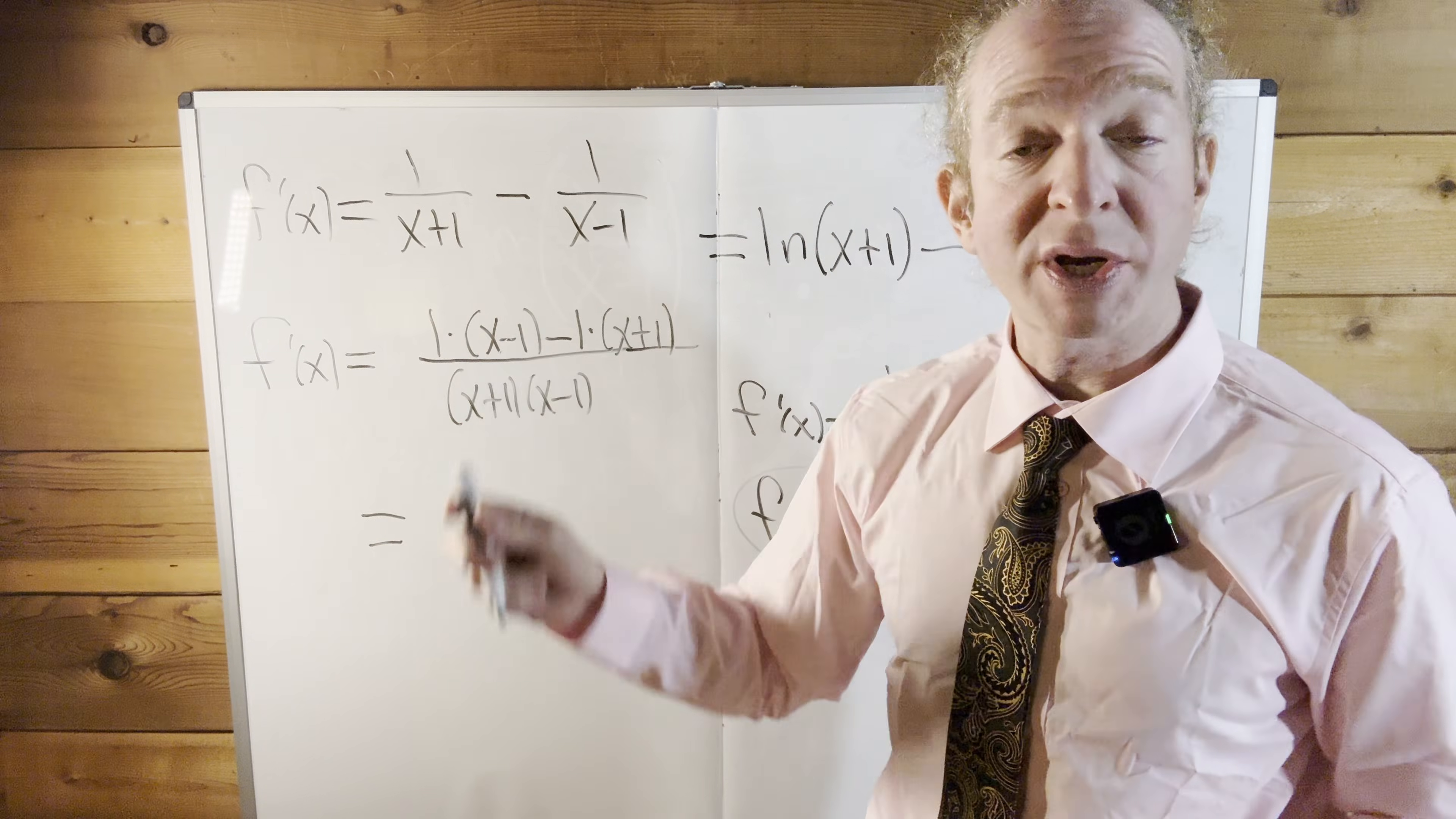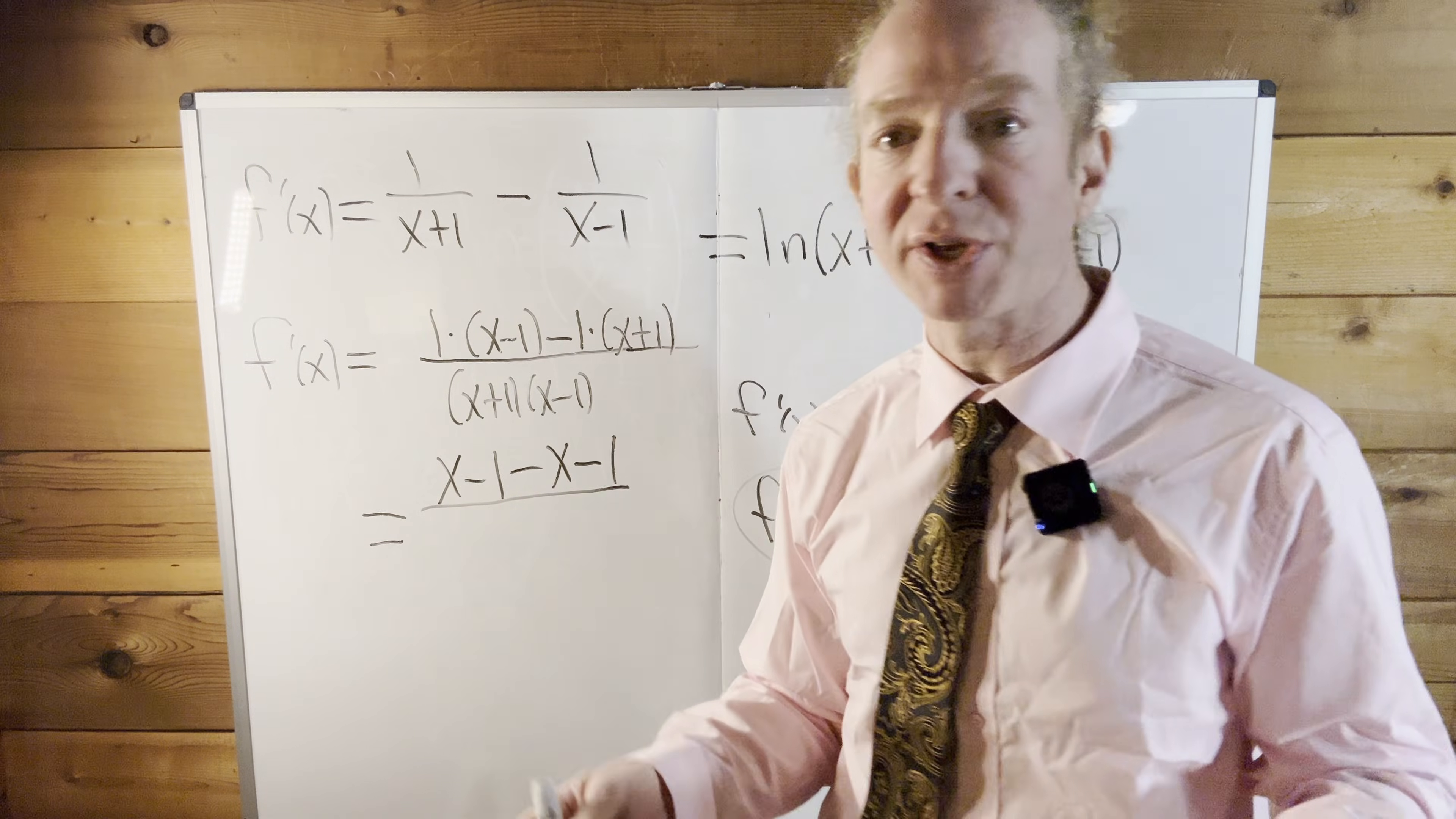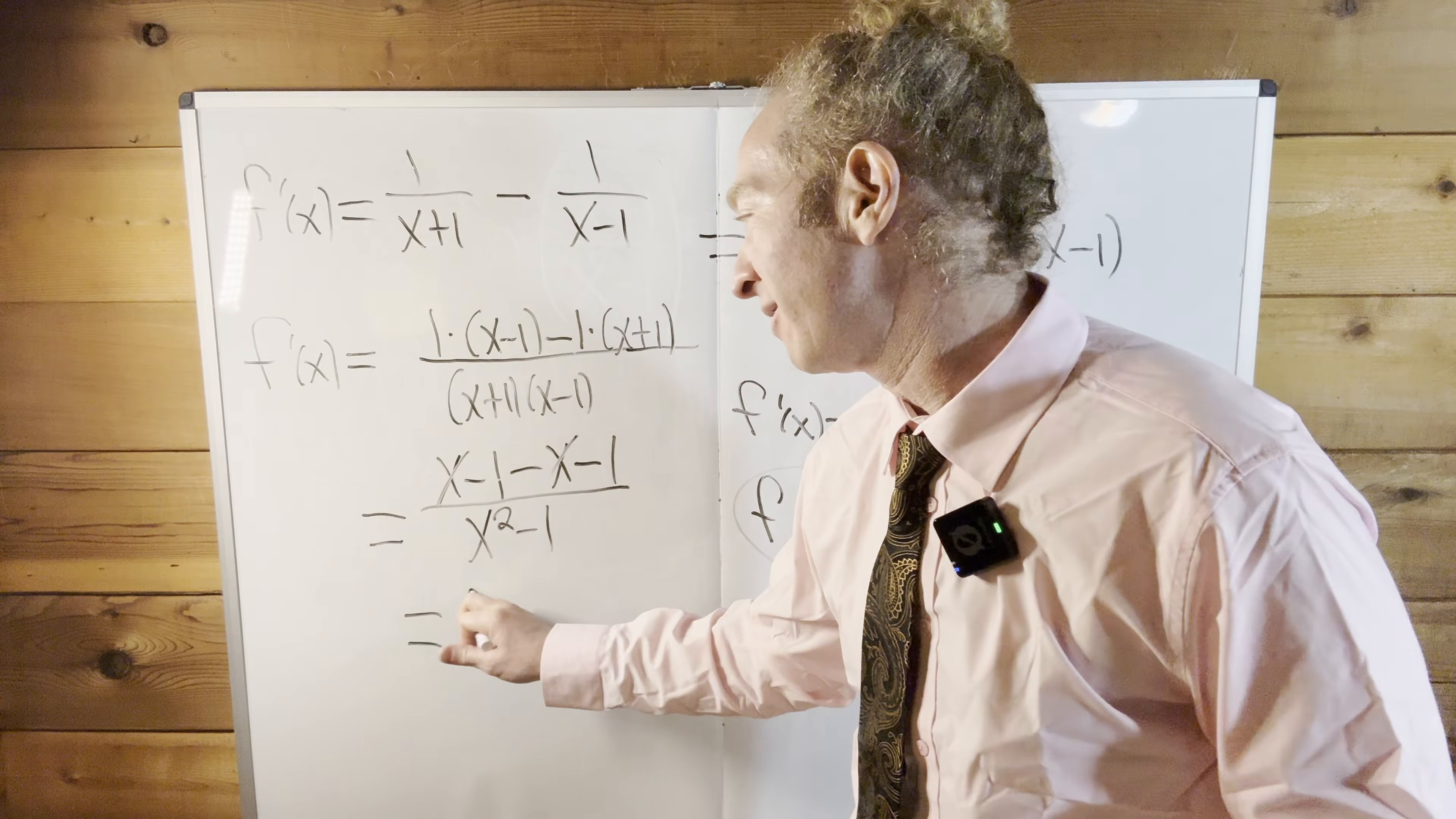1 times x minus 1 is simply x minus 1. There's a minus here, so we can distribute, so minus x minus 1 over, this is the difference of squares, x plus 1 times x minus 1 is x squared minus 1. Beautiful. These cancel. Minus 1 minus 1 is minus 2. Let's not mess up there.